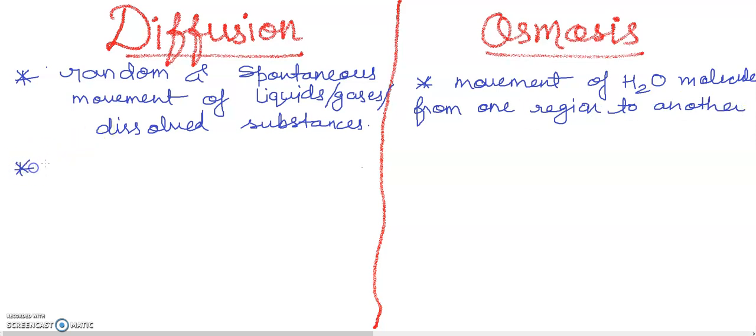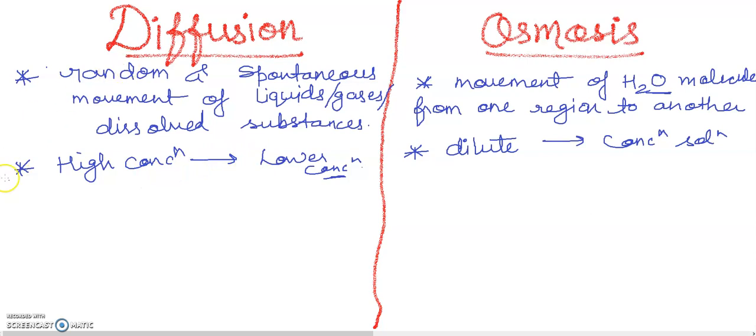Here basically we have discussed the point that molecules can move from higher concentration to lower concentration - molecules movement from higher to lower concentration. We have water molecules movement from dilute to concentrated. Diffusion occurs without barrier - we can say that.